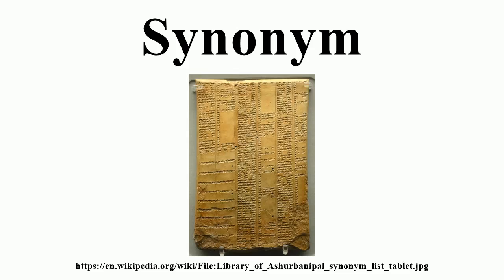Homophones are words that have the same pronunciation but different meanings. For example, witch and which are homophones in most accents. Homographs are words that have the same spelling but different pronunciations. For example, one can record a song or keep a record of documents. Homonyms are words that have the same pronunciation and spelling but different meanings. For example, rose and rose are homonyms.